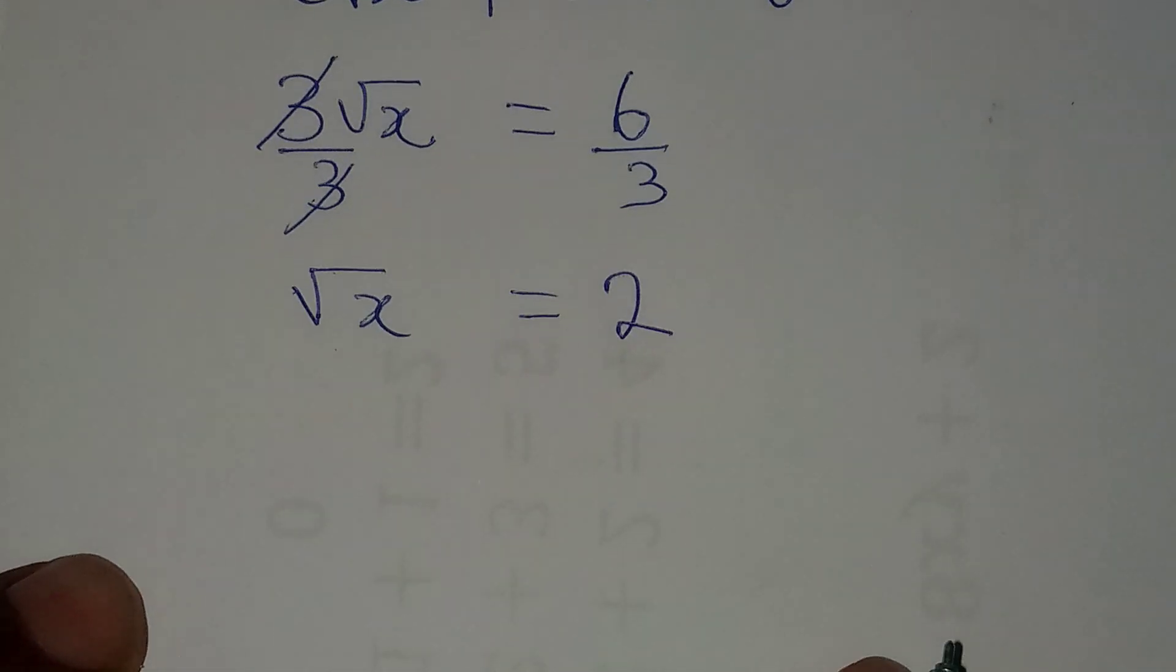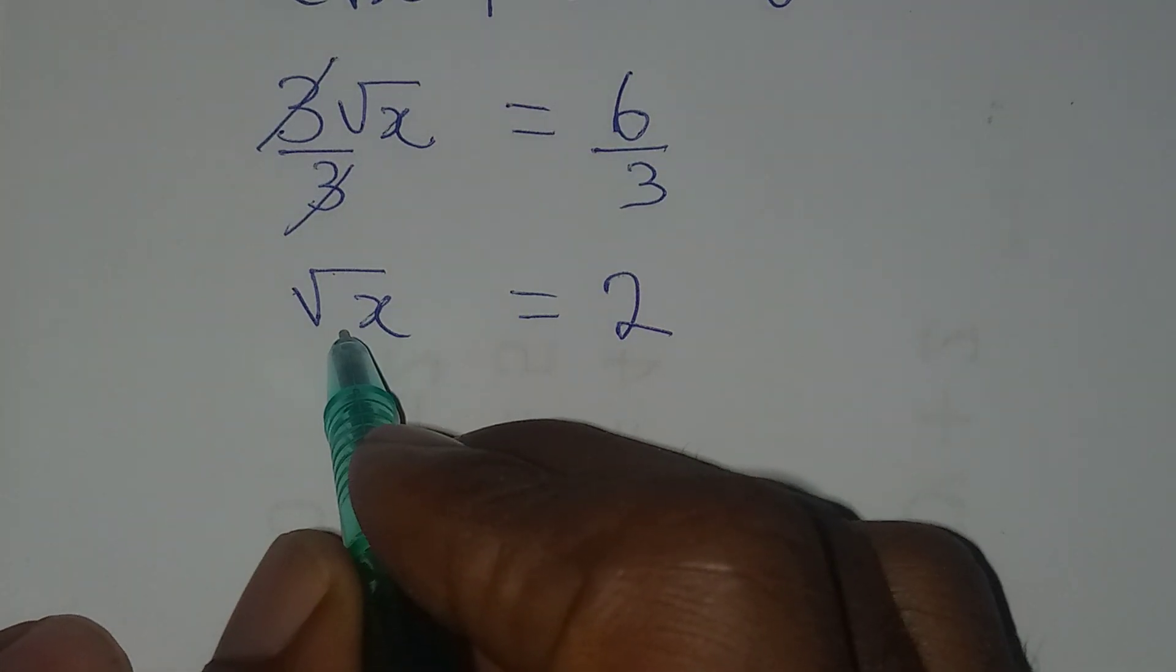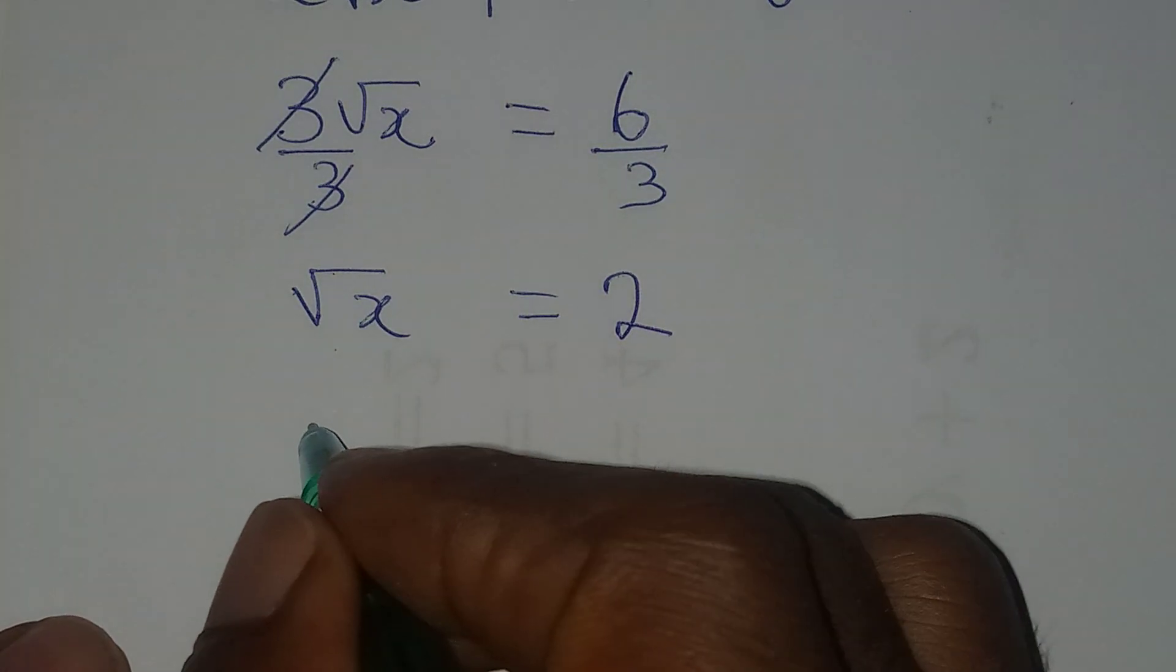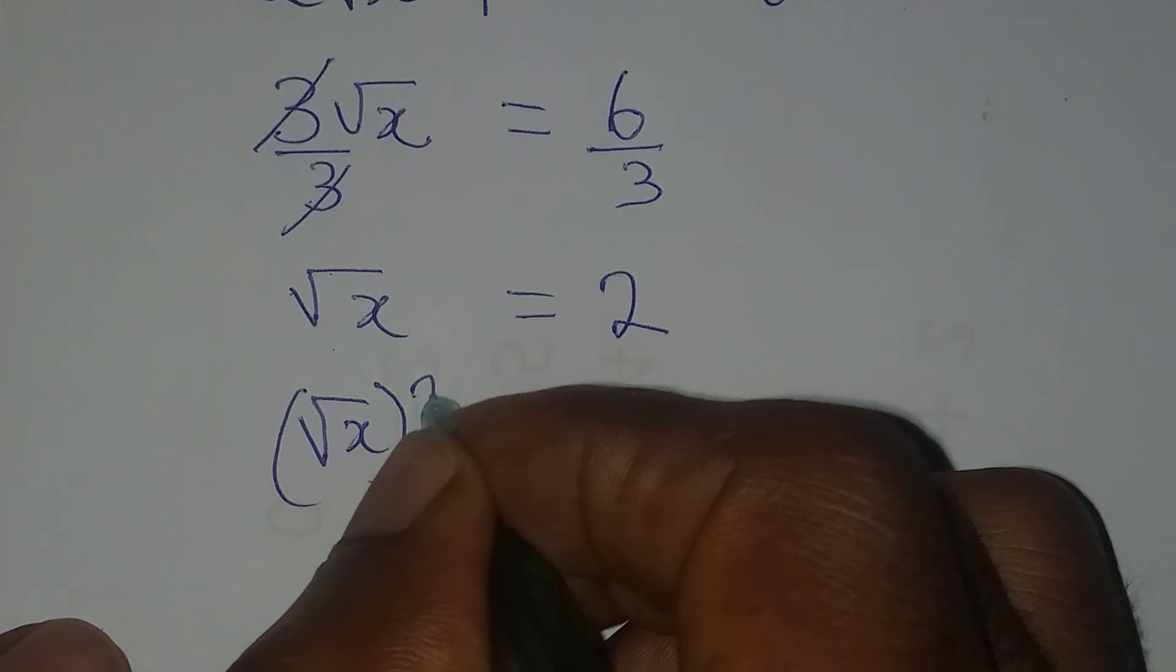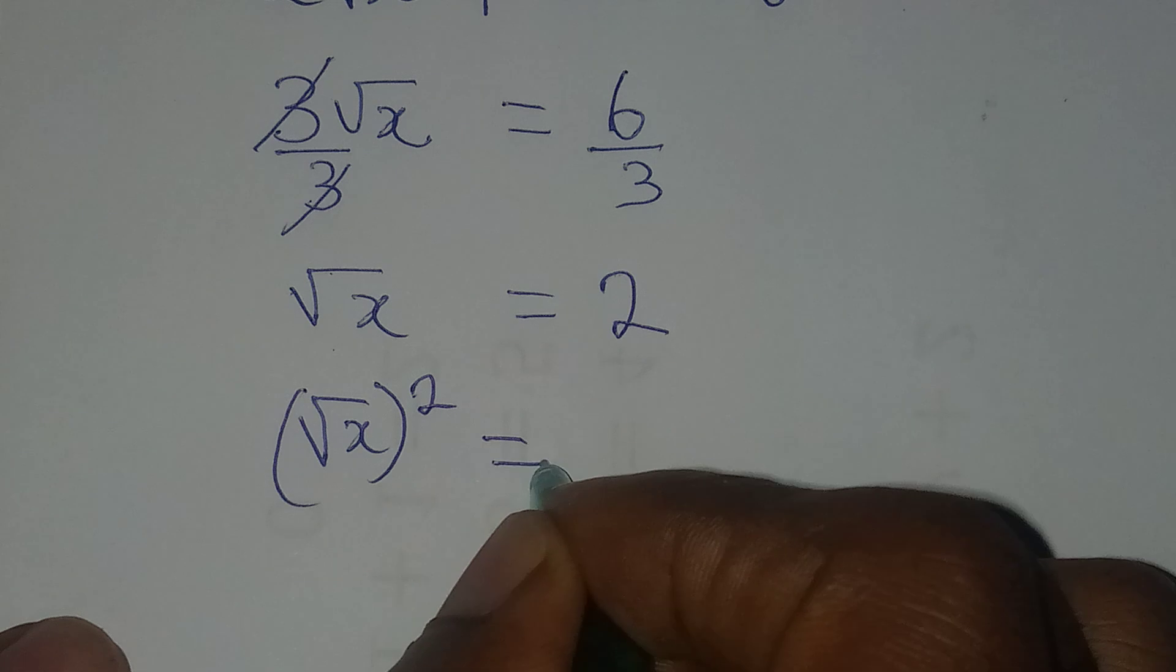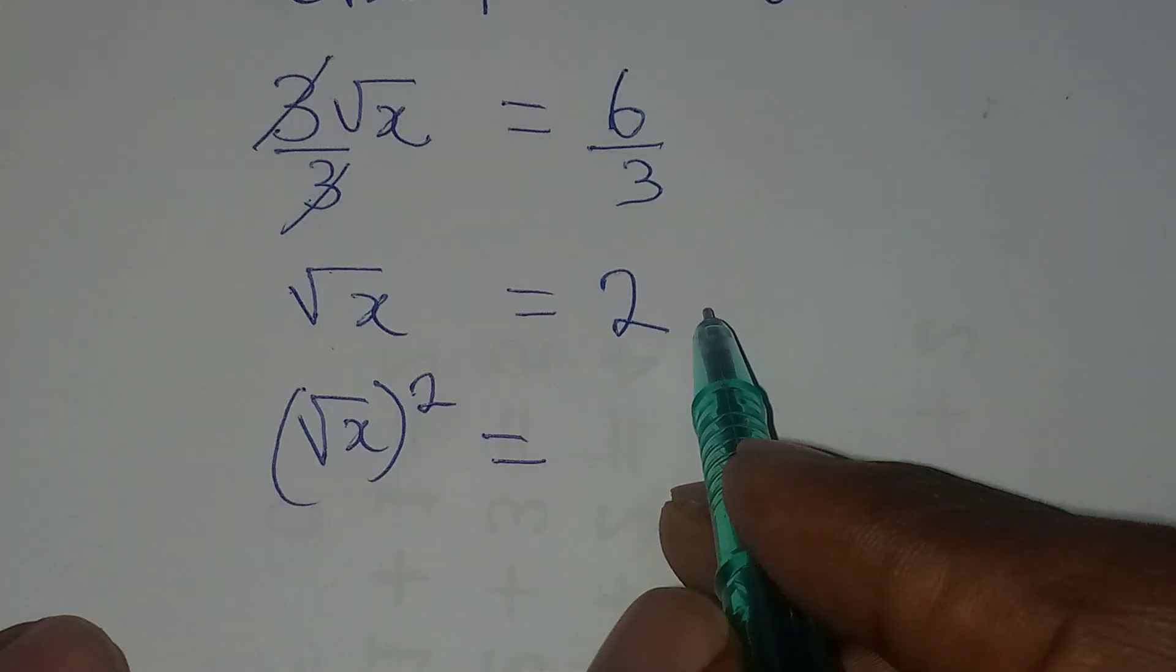And then from here, I have to remove the square root. And to remove the square root, I will square it. And whatever you do on one side, you must do it on the other side.